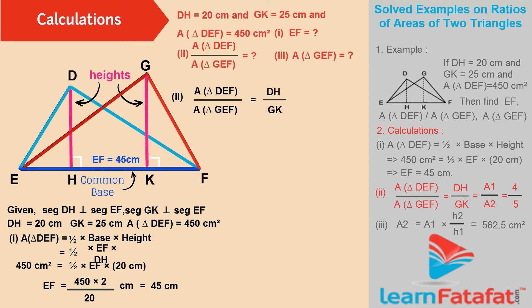Or simply, A1 divided by A2 is equal to H1 divided by H2. That is, A1 divided by A2 is equal to 20 divided by 25, which gives A1 divided by A2 is equal to 4 divided by 5.